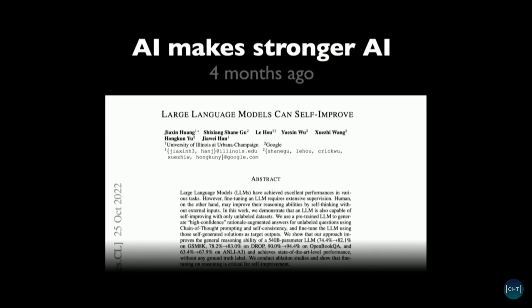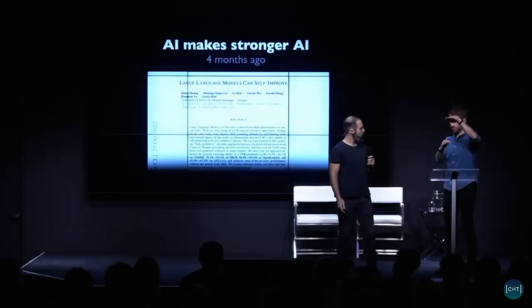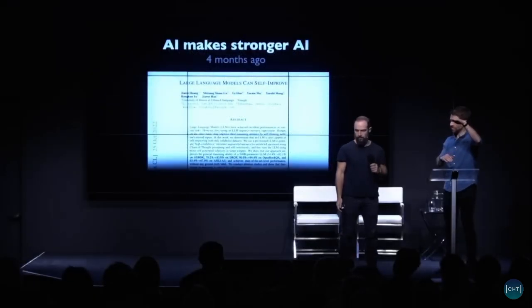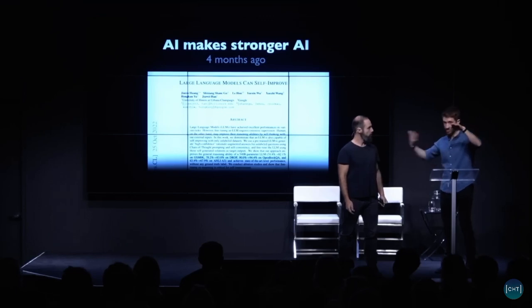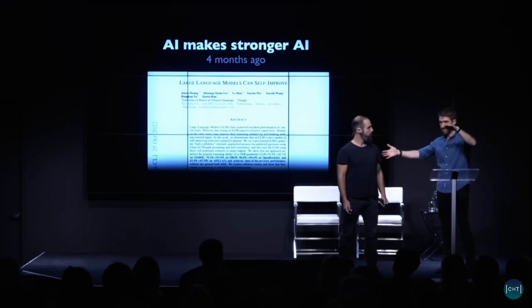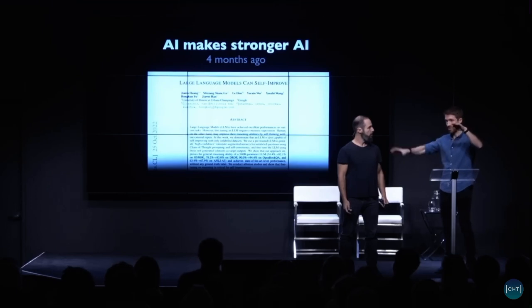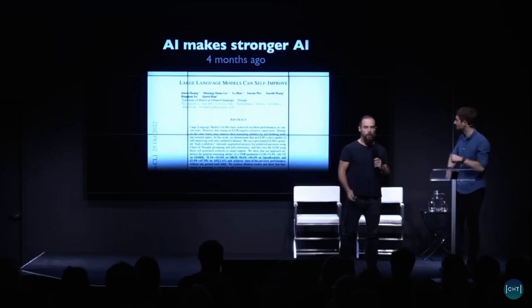But four months ago, this group of researchers figured it out. The model spits out a whole bunch of data, looks at the data, figures out which ones actually make it better, and then uses those to train — and it can just do that auto-recursively. It has a test, like a performance accuracy score, and it starts generating its own training data, figures out which kind of training data it generates for itself — because it's a generative AI — that actually makes it better at passing this test. So it's able to create its own training data to make it pass tests better and better and better.